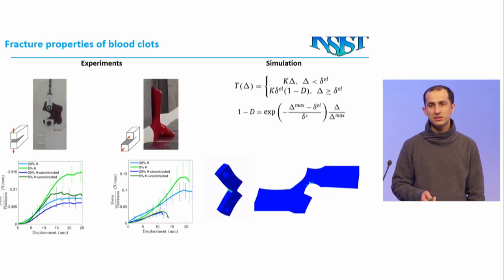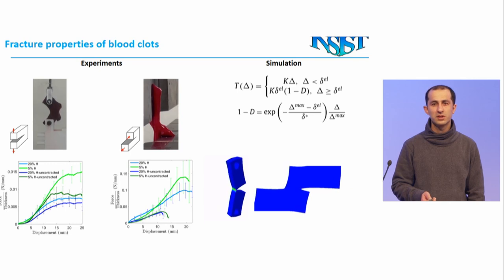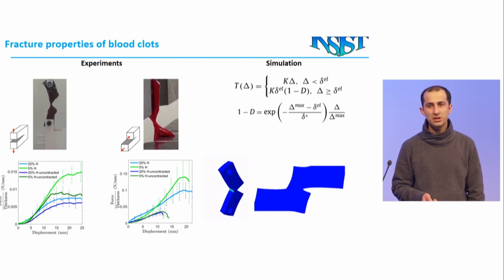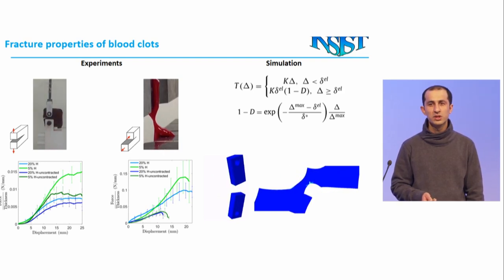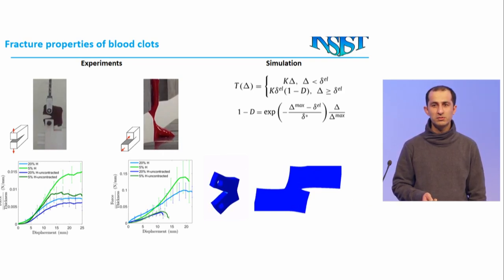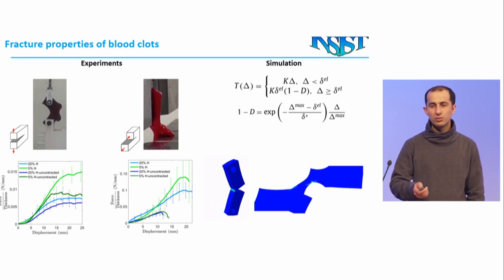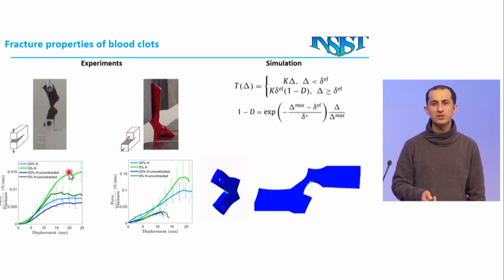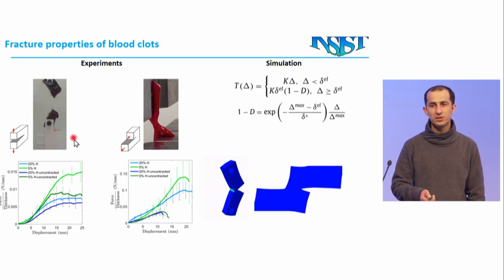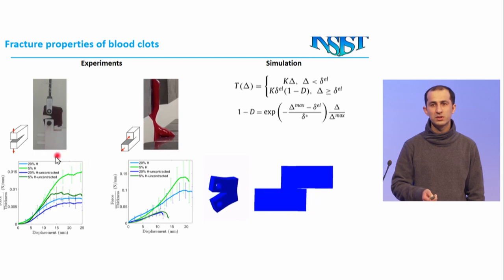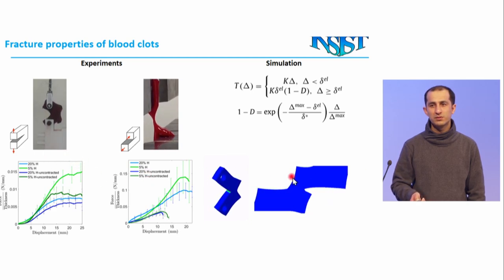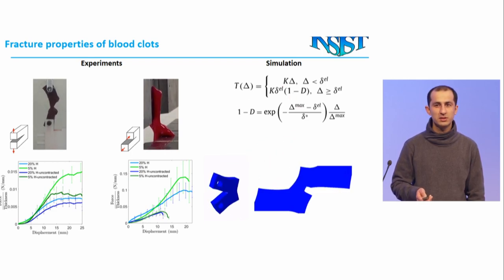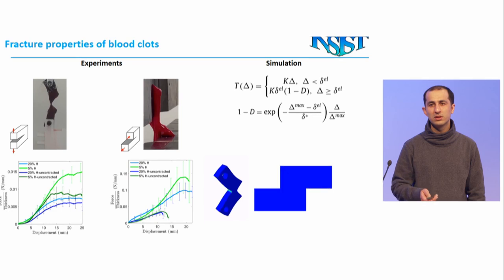The next thing we investigated is the fracture risk of clots based on clot composition, and this is important because clot fragmentation is a significant issue during mechanical thrombectomy. We designed different types of testing to investigate the fracture of blood clots in different modes, and we also performed finite element simulations and developed models to replicate these experimental observations.